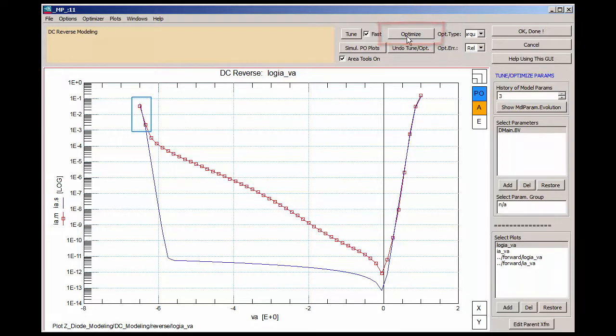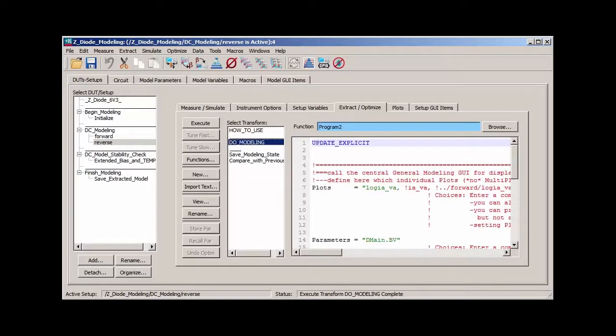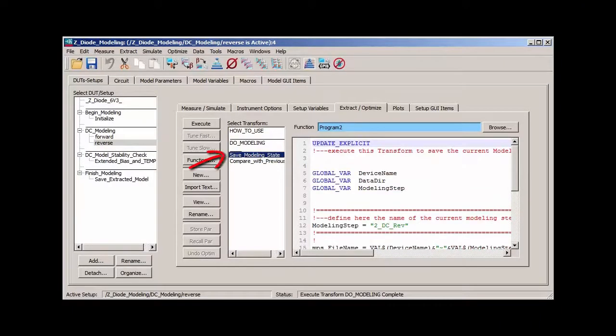I then optimize the fitting in the blue marked Zener range. Well, the measured data shows significantly more leakage current before the Zener voltage, and this cannot be fitted with the simple SPICE model we have used so far. And so we need to improve the underlying model. I hit OK to close this window and execute the transform save modeling state to save the current model status and its parameters.